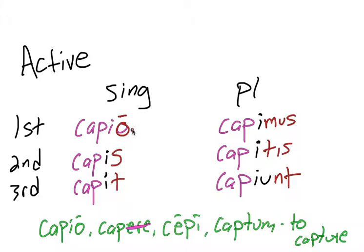So capio would be I take or capture, capis you capture, capit he or she captures, capimus we capture, capitis you all capture, and capiunt they capture. Now just for comparison, we're going to put audio right next to capio.